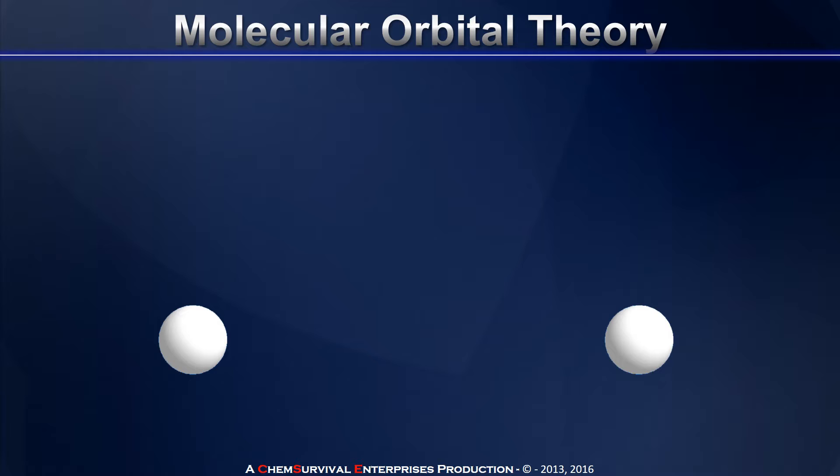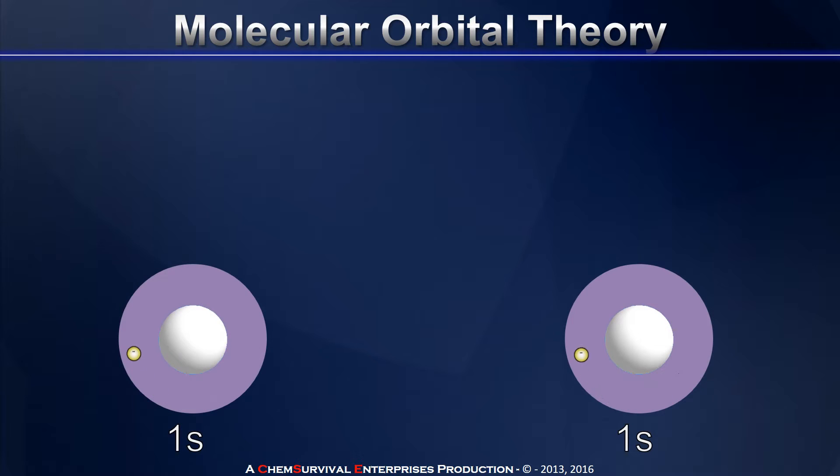So let's start with hydrogen. Here I have two isolated hydrogen atoms, and we know that each isolated hydrogen atom should have one electron located in the 1s subshell when in its ground state.